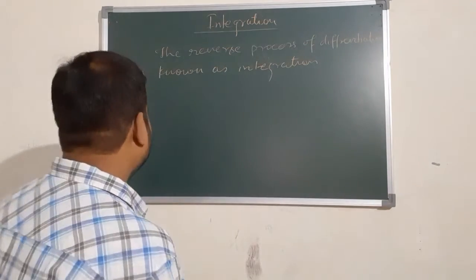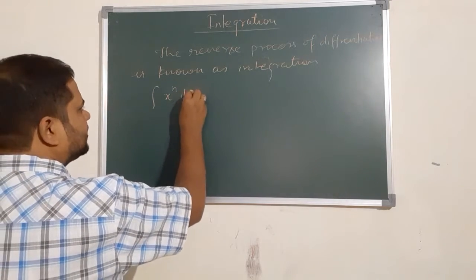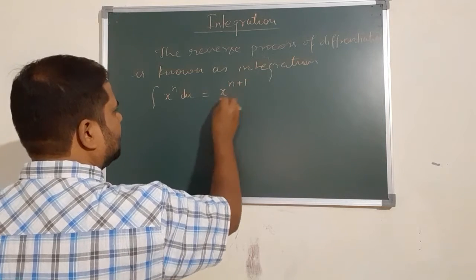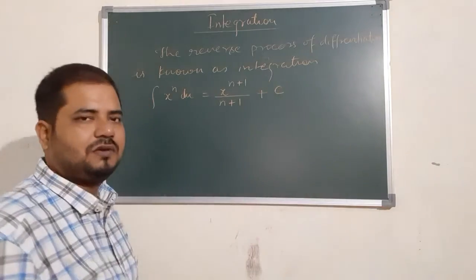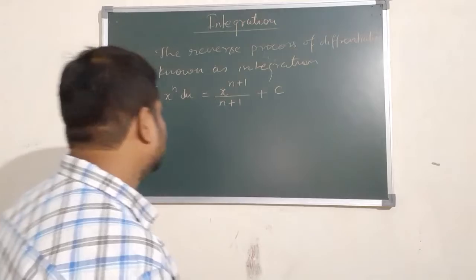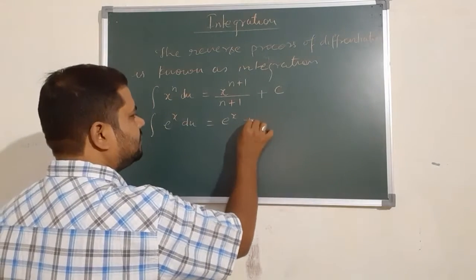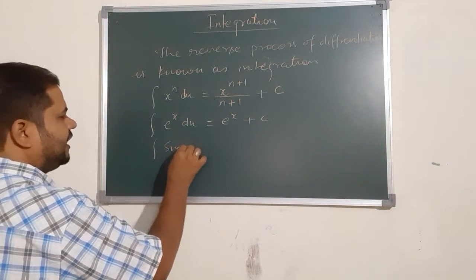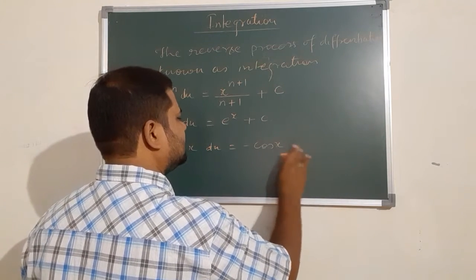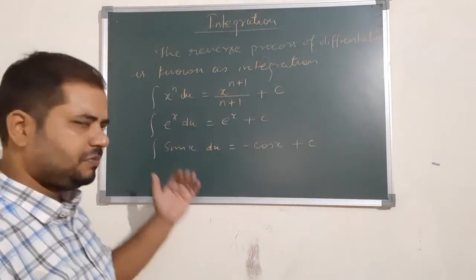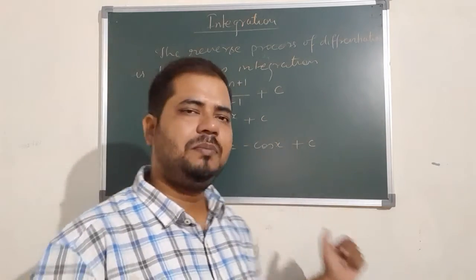Let us start some formulas. Integration of x to the power n dx is x to the power n+1 by n+1, plus a constant of integration c. Similarly, integration of e to the power x dx is equal to e to the power x plus c. Integration of sin x is minus cos x plus c. So many formulas — please note them down from your book; they are given on the left-hand page.